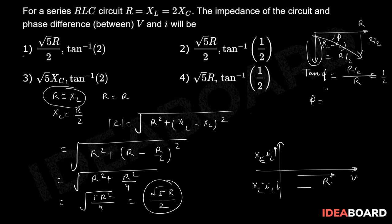Correct. So which answer has to be the right option? So under root 5R by 2, under root 5R by 2 and tan inverse 1 upon 2, so second option has to be the right choice.